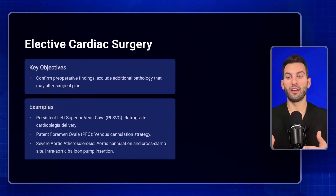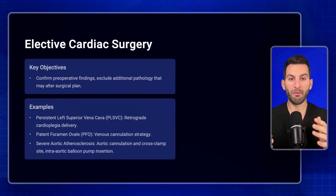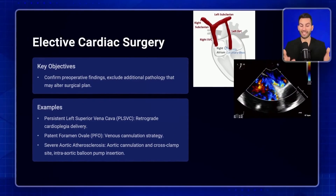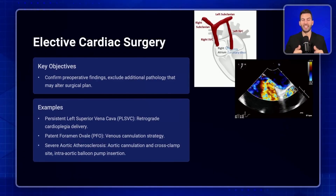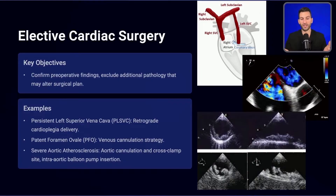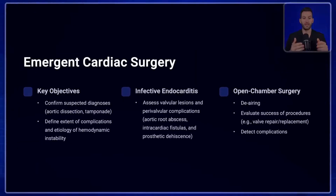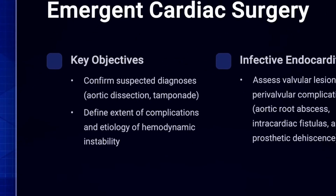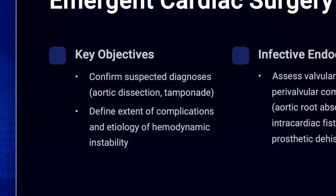In elective cardiac surgery, TEE can be used to confirm preoperative findings and exclude additional pathology that may alter the surgical plan. Key features include a persistent left SVC that may change cardioplegia administration strategy, detection of a PFO that may change to a bicaval venous cannulation strategy especially if repair is indicated, and severe aortic atherosclerosis that may prompt re-evaluation of aortic cannulation and cross-clamp site or consideration of mechanical support like an intra-aortic balloon pump. In emergent cardiac surgery, TEE can confirm suspected diagnoses like aortic dissection and cardiac tamponade, and define the extent of complications related to hemodynamic instability.